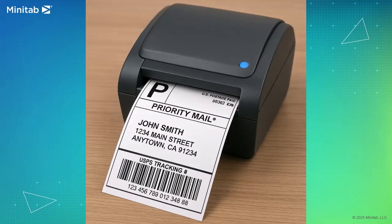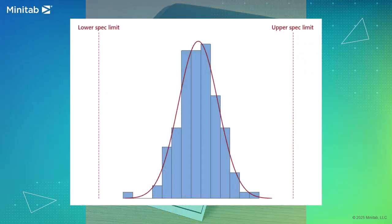For example, you print labels for a shipping process. If the labels are too small or too big, they will not feed into printers properly. In this case, you have both a lower and an upper spec.